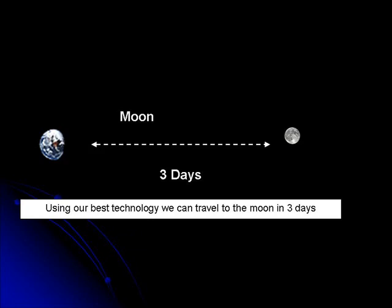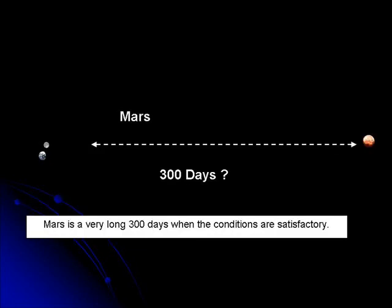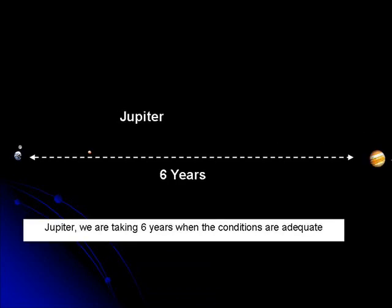Using our best technology we can travel to the moon in three days. Mars is a very long 300 days when the conditions are satisfactory. Jupiter we are talking six years when the conditions are adequate.